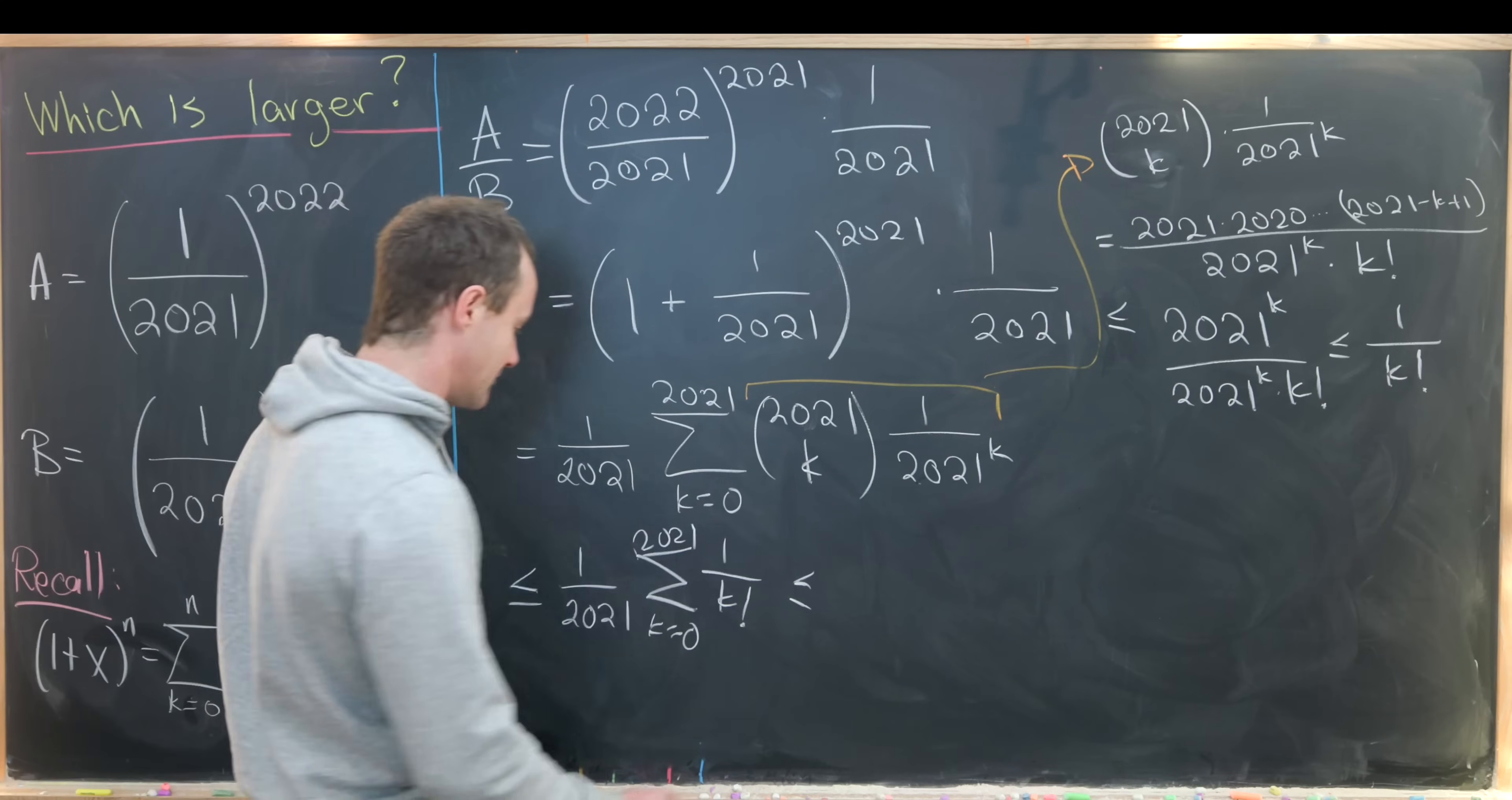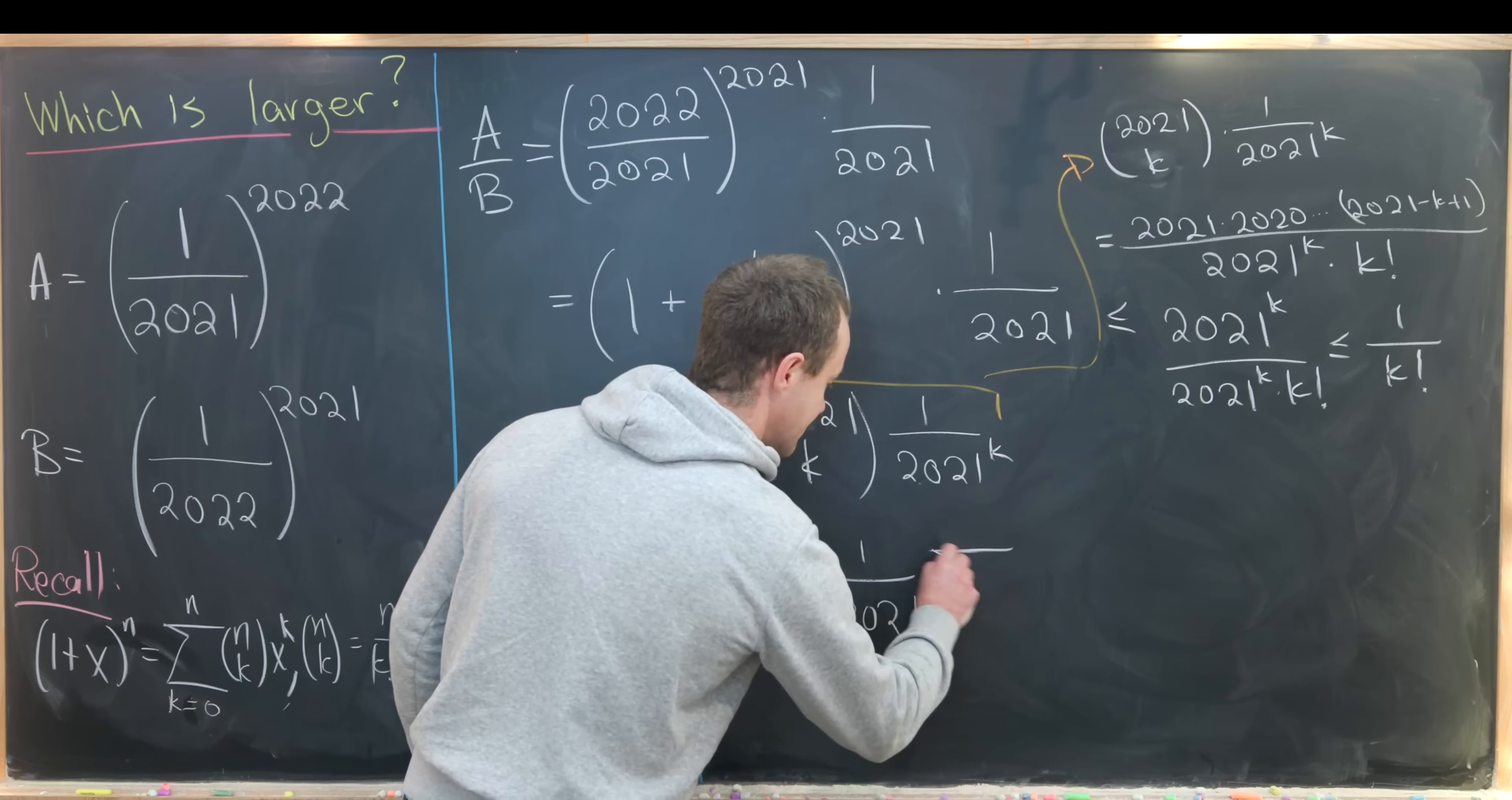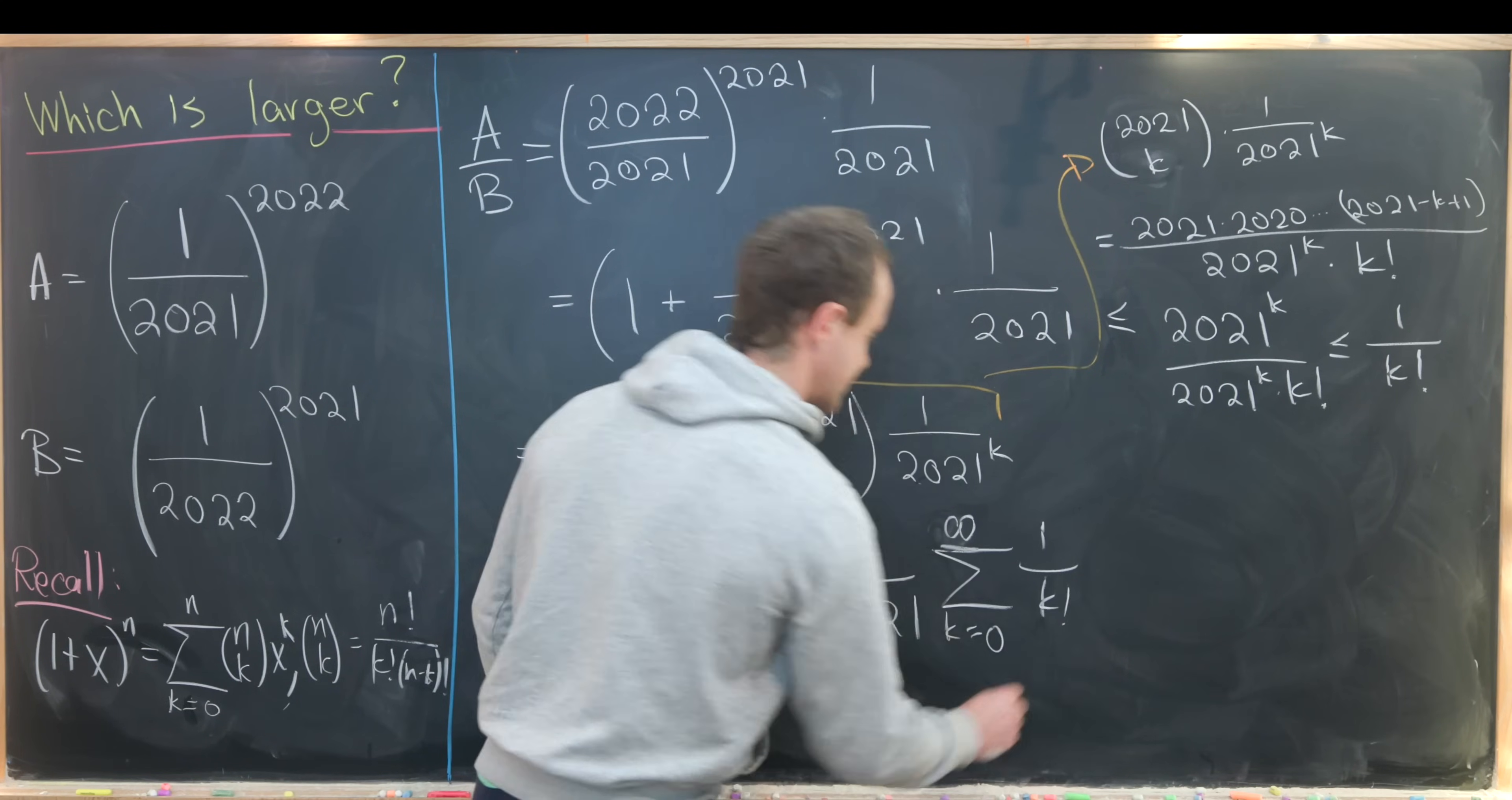So that means our object is less than or equal to 1 over 2021 times the sum as k goes from 0 up to infinity of 1 over k factorial.